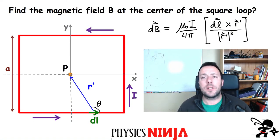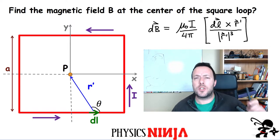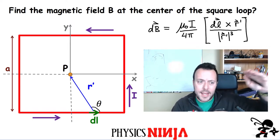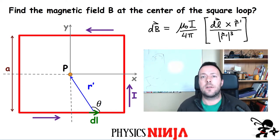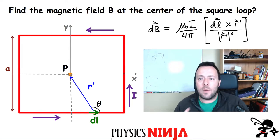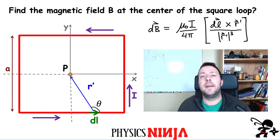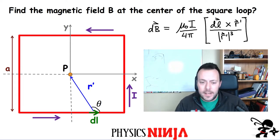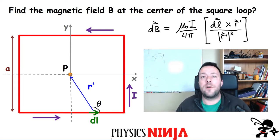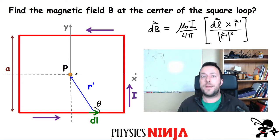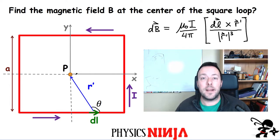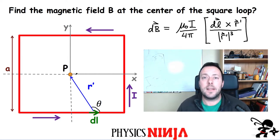Hi everybody, PhysicsNinja here. Today I want to look at the magnetic field produced by the square loop right here. I've got a square loop, the length of the square is A and I've got a current I going around that loop in the counterclockwise direction. I want to apply the Biot-Savart law and integrate over the entire loop to find the total magnetic field produced by this square loop at its center. Let's get started.